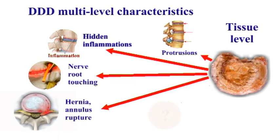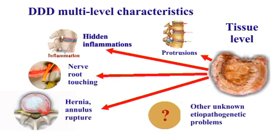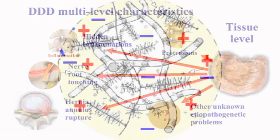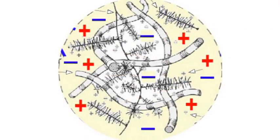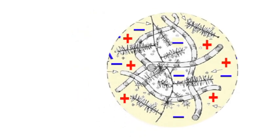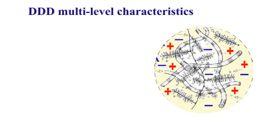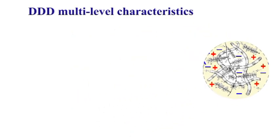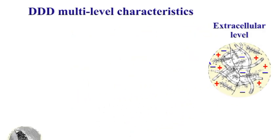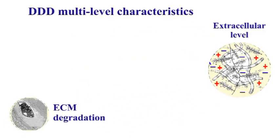The tissue level changes are generated by extracellular level factors such as nutrient supply deficiency, water depletion, extracellular matrix degradation, and others.